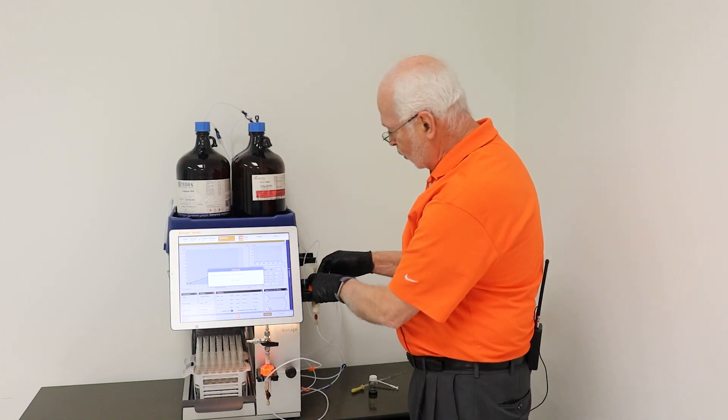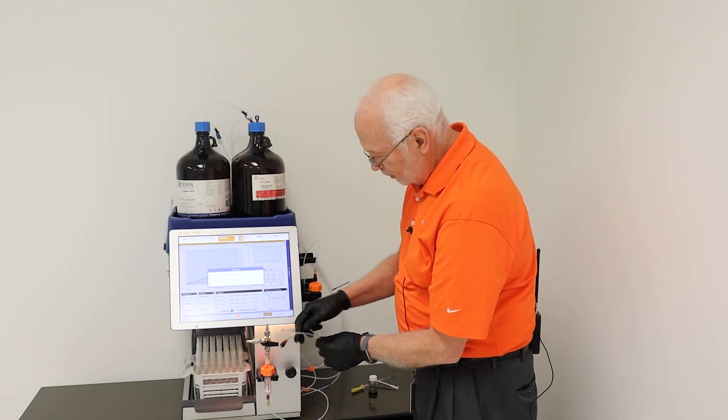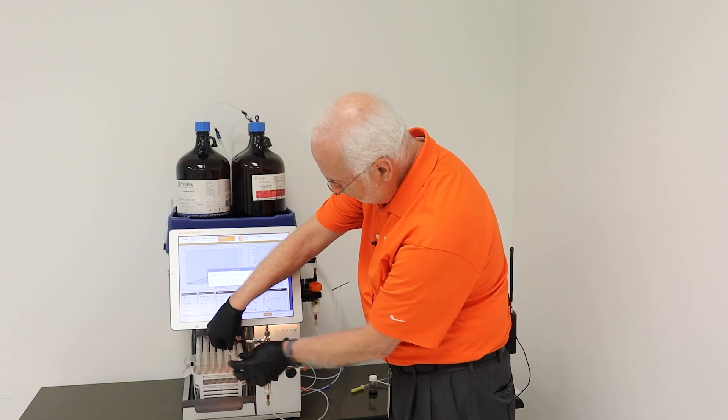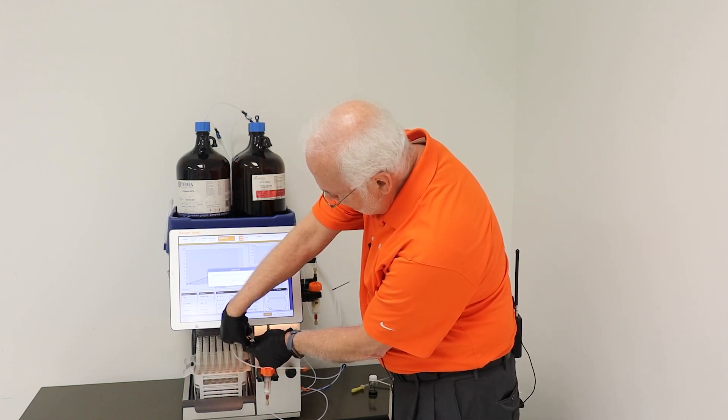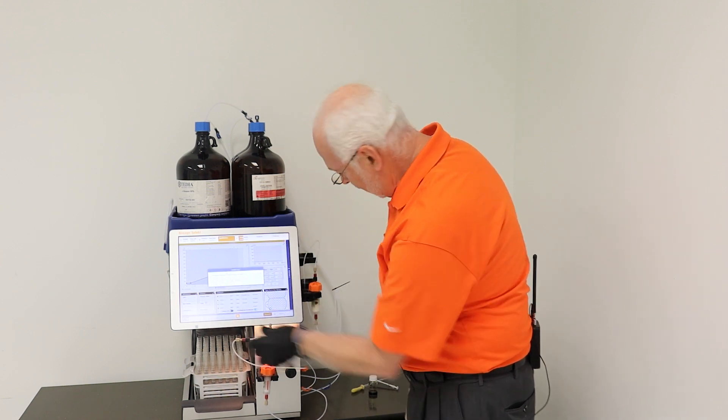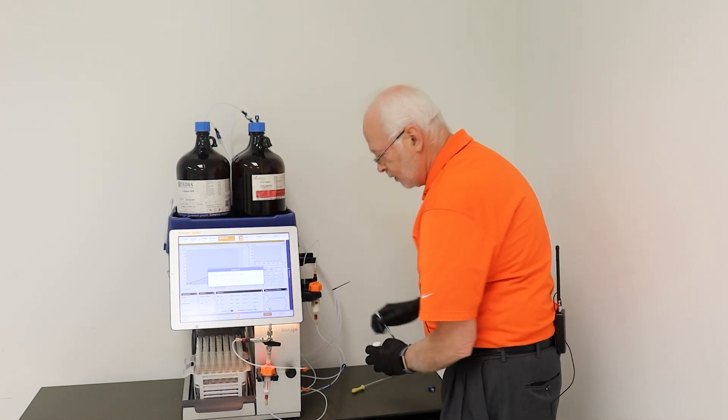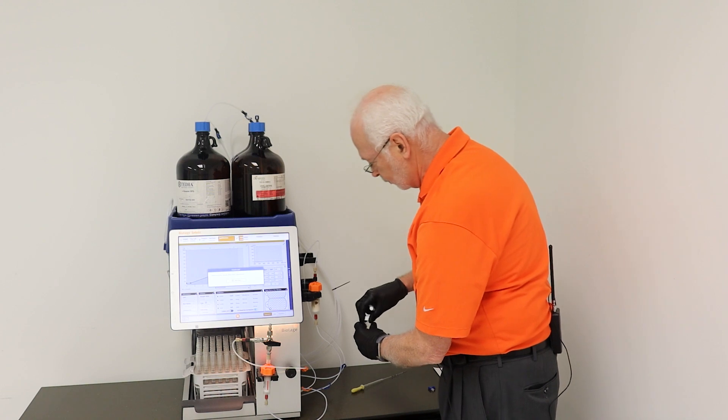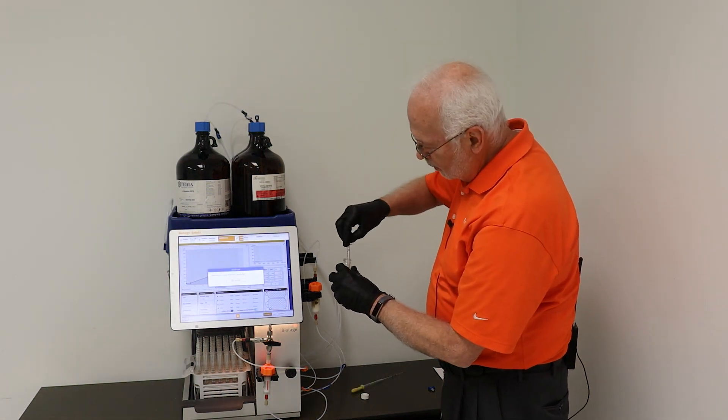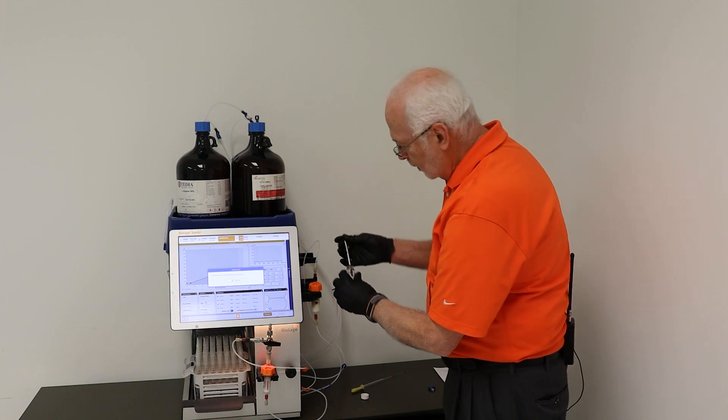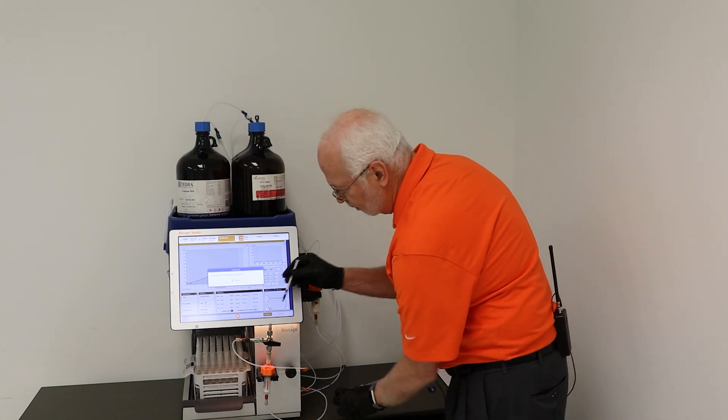You would take your solvent line and attach that to the side port, and then you can take your sample and use a syringe and do a liquid load and inject whatever volume you want.